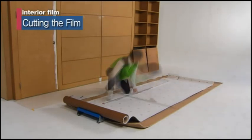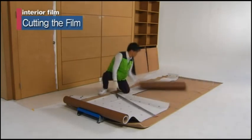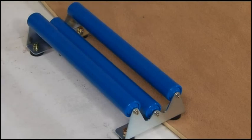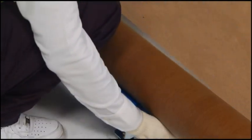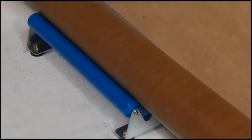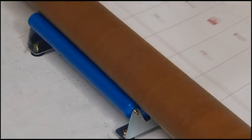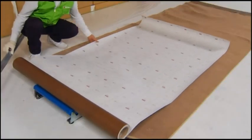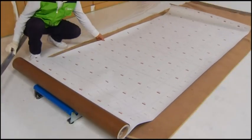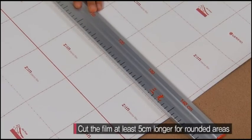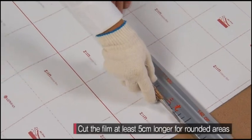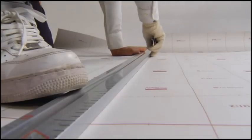Next is the process of cutting the interior film. Use a rubber mat or carpet as a surface, and use a rolling cutter for a clean and easy cut. After measuring the dimensions of the adhesive surface, cut it, leaving a three to five centimeter margin.